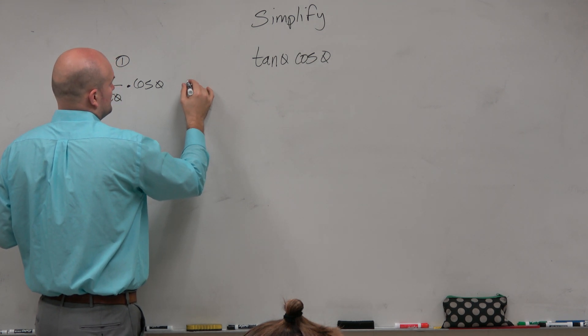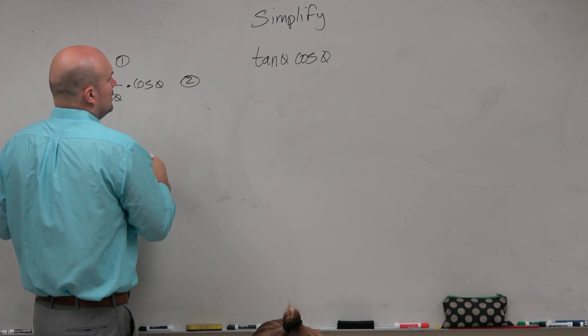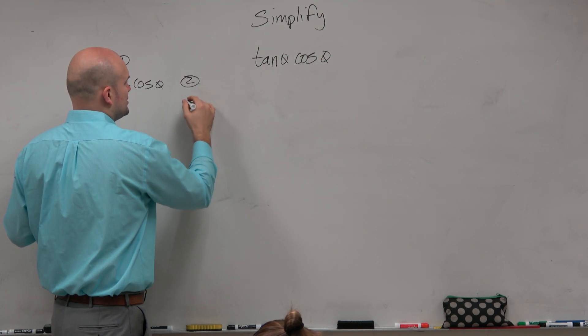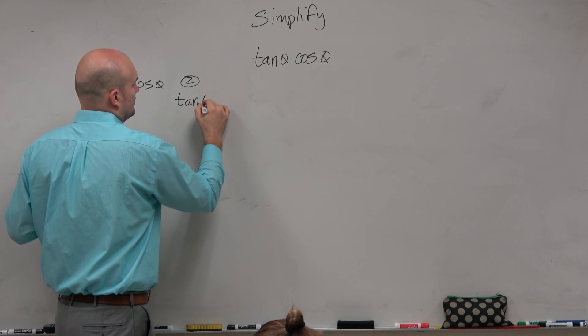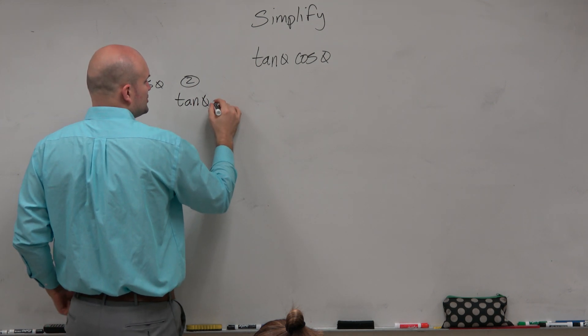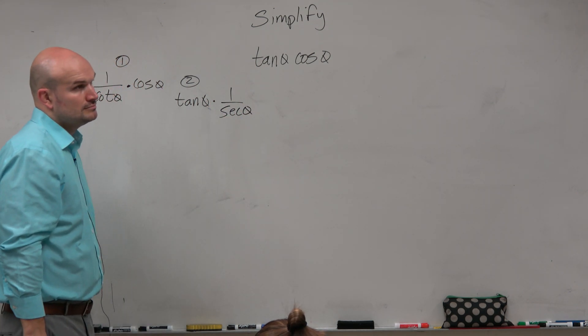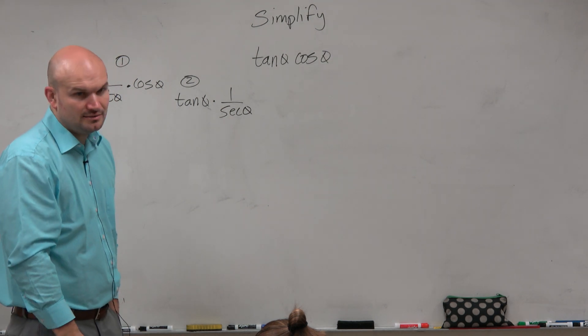So let's try, why don't we convert the cosine, then? Why don't we keep tangent of theta, but change cosine to 1 over secant? Does that help us out at all? No.